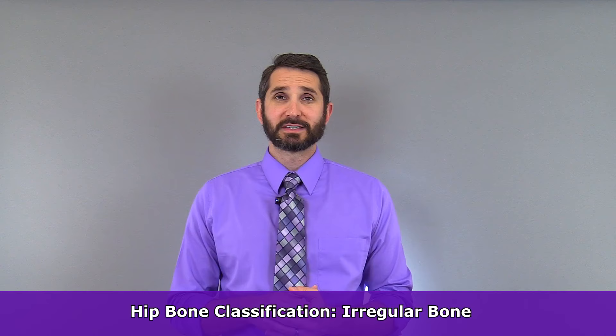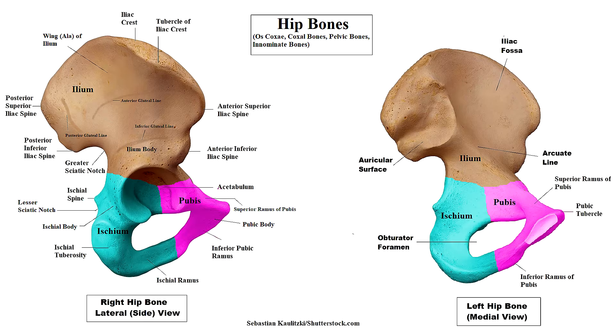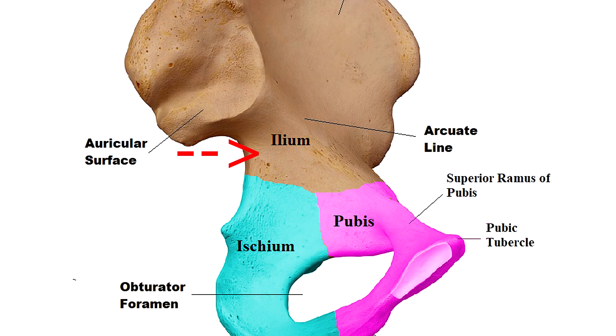Most anatomists today classify the hip bones as irregular bones, though a few anatomists in the past have classified them as flat bones, so you might want to be aware of that. Each hip bone is divided into three main regions: the ilium, which is the brownish color in this picture; the ischium, which is the bluish color; and the pubis, which is represented by the pinkish color. These three regions begin as separate bones in youth but they later fuse together to form one solid hip bone.